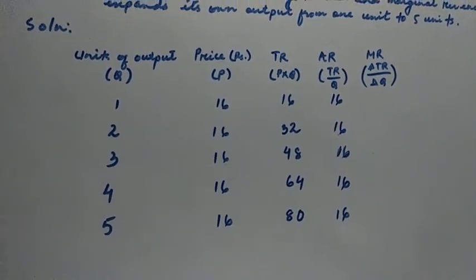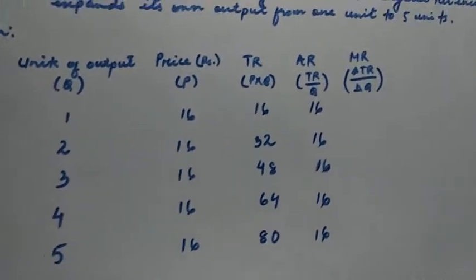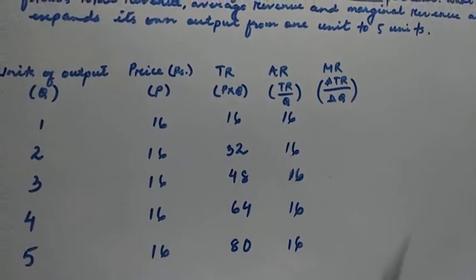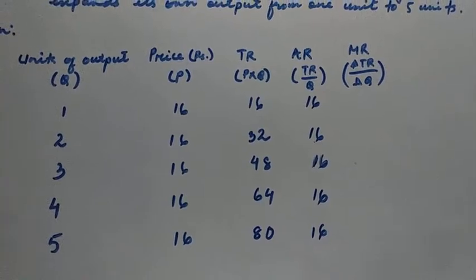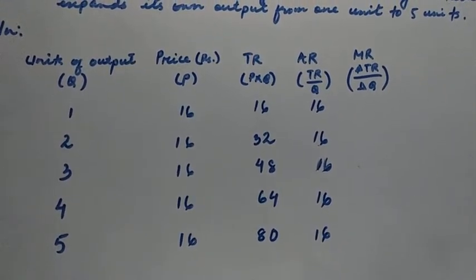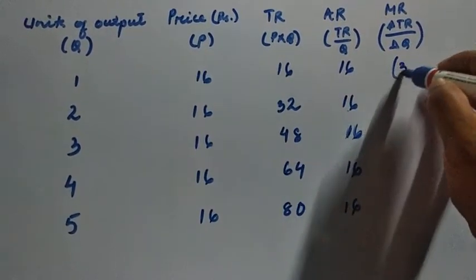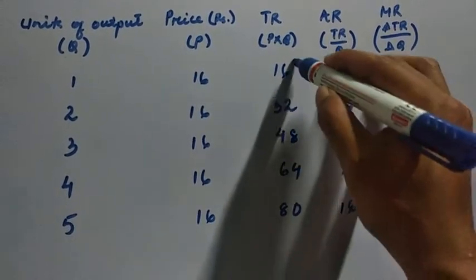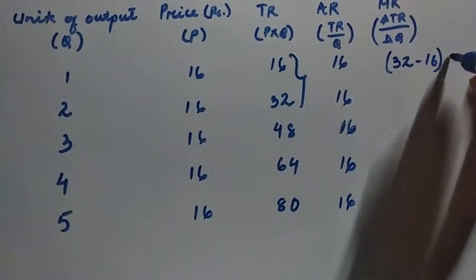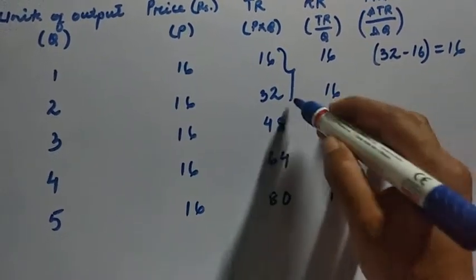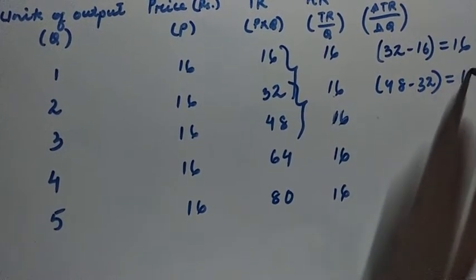We have obtained average revenue given total revenue and units of output. Lastly, marginal revenue is found by taking the difference between two successive total revenues. So 32 minus 16 equals 16, and 48 minus 32 is again 16.